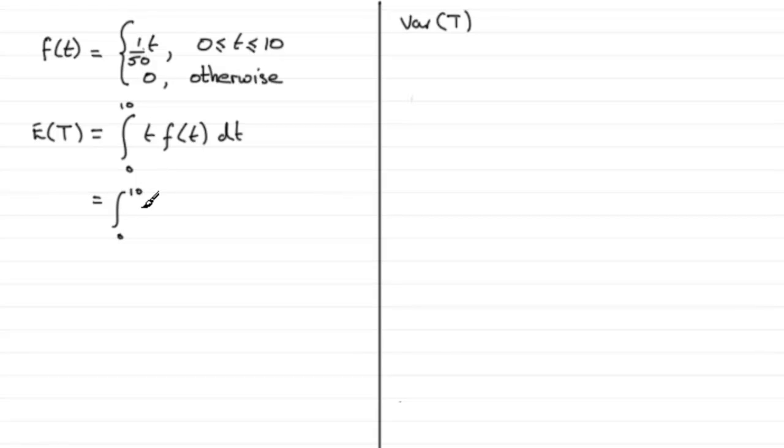We've got the integral from 0 to 10 of t multiplied by f(t), which is 1/50, or t over 50 if you like. Don't forget that dt; we're integrating with respect to t.